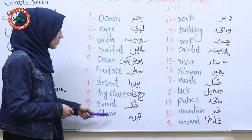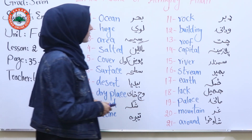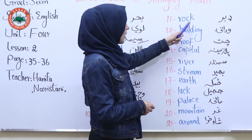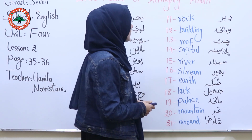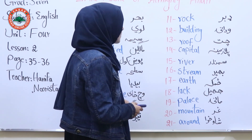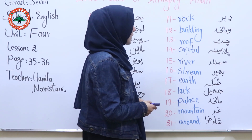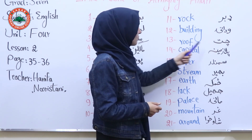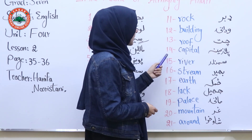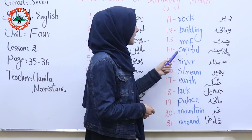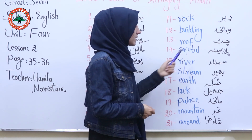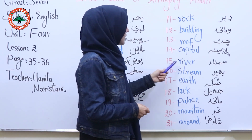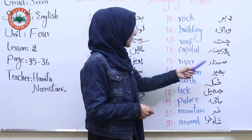Number 10: stone — tiga. Number 11: rock — dabar. Number 12: building — wadane. Number 13: roof — chat. Number 14: capital — paitakh. Number 15: river — samandar.